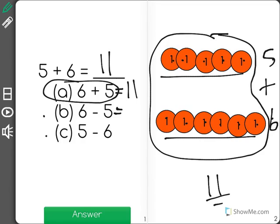As you can see, when we subtract 6 minus 5, we only have 1 left. And 5 take away 6, we have a negative 1. So the correct answer is A.